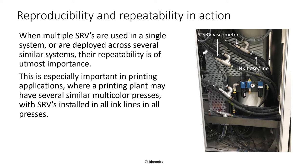It can be disconcerting for users accustomed to mechanical means of measuring viscosity to find the SRV's measurements to be very different from their lab measurements. What is crucial to maintaining constant properties of a process fluid are reproducibility and repeatability. SRV's high reproducibility means that two different SRVs in the same fluid will give the same reading — important when installed on parallel process lines or when replacing a damaged instrument. SRV's repeatability means it will maintain the consistency of a fluid's viscosity even over long production runs, and is a measure of the sensor's stability.